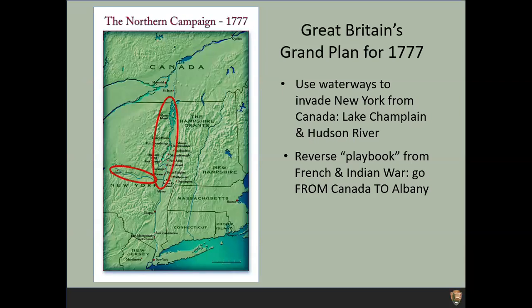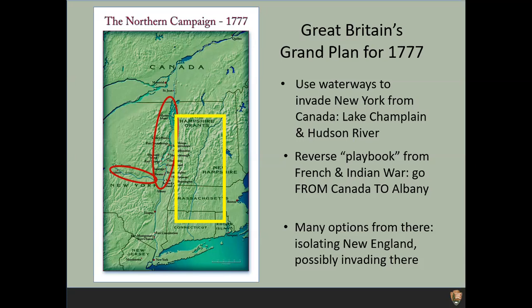They are basically reversing their playbook from the French and Indian War. They had left Albany to head north into French-held territory, invading all the way up into Canada in some cases. Now, holding Canada after the French and Indian War, they're flipping the playbook around — going from Canada to Albany. From there they had multiple options, with a yellowish rectangle over New England. Nobody knew on the American side what the British might do, but they had many options once they reached Albany — potentially isolating New England or even invading. Realistically, the British weren't quite sure either, but they had options open to them.